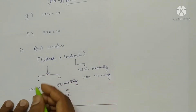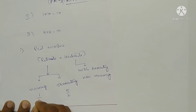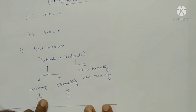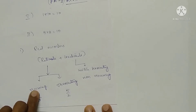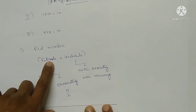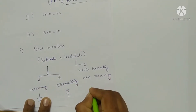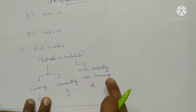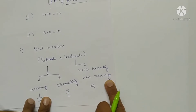For the terminating type, an example is 5 by 2. For recurring, the example is 1 by 3 — the result is 0.3333... which equals 0.3 bar. This is a recurring decimal expansion, and both come under rationals. For irrationals, root 2 is an example — the decimal expansion of root 2 is neither terminating nor recurring.